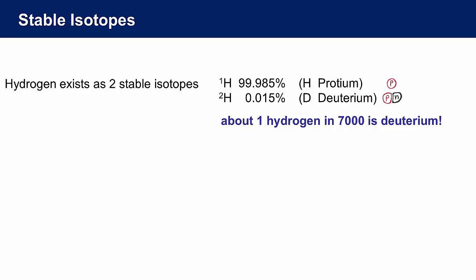There is another stable isotope of hydrogen. It has one proton and one neutron in the nucleus. We call it the 2H isotope, also known as deuterium. The protium isotope is much more abundant than the deuterium. Only about one in 7,000 hydrogen atoms is deuterium. The rest are all protium.